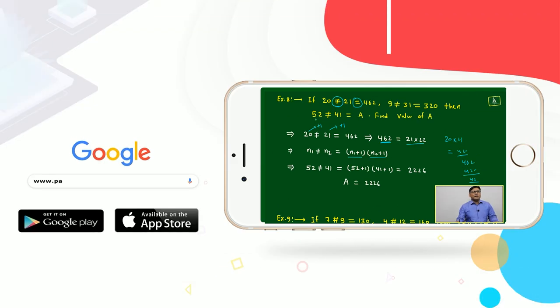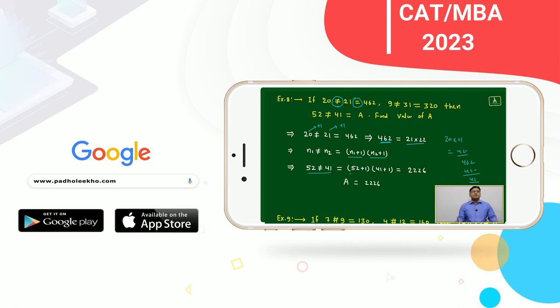Similarly, we have to find 52 is not equal to 41 equal to A. What is the value of A? Then 52 is not equal to 41 is 52 plus 1 into 41 plus 1.